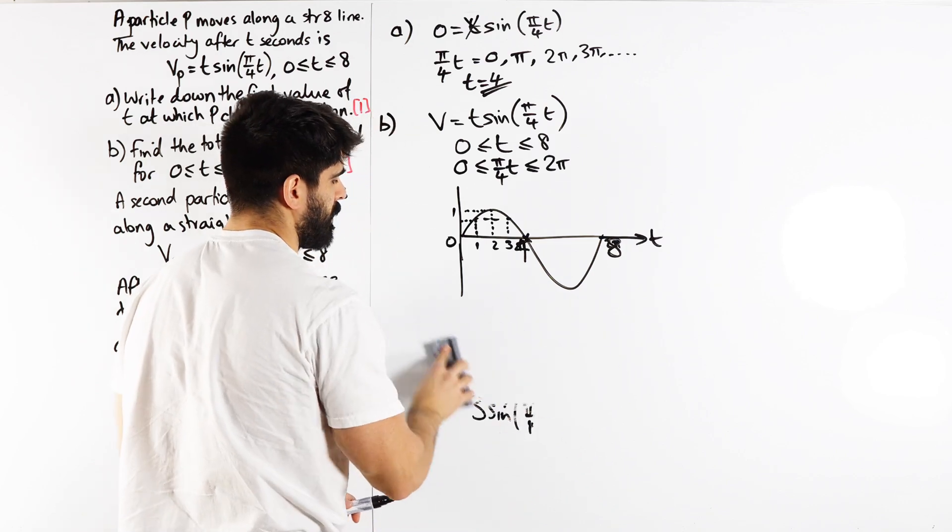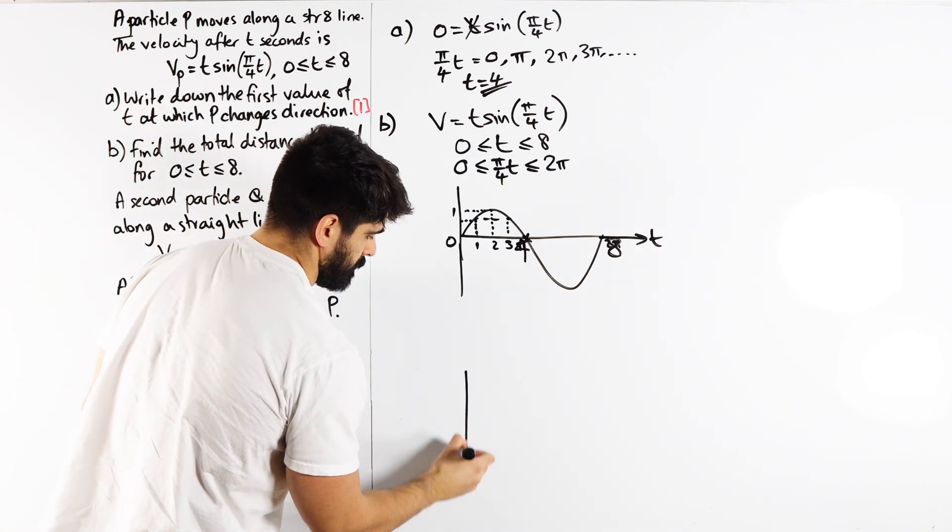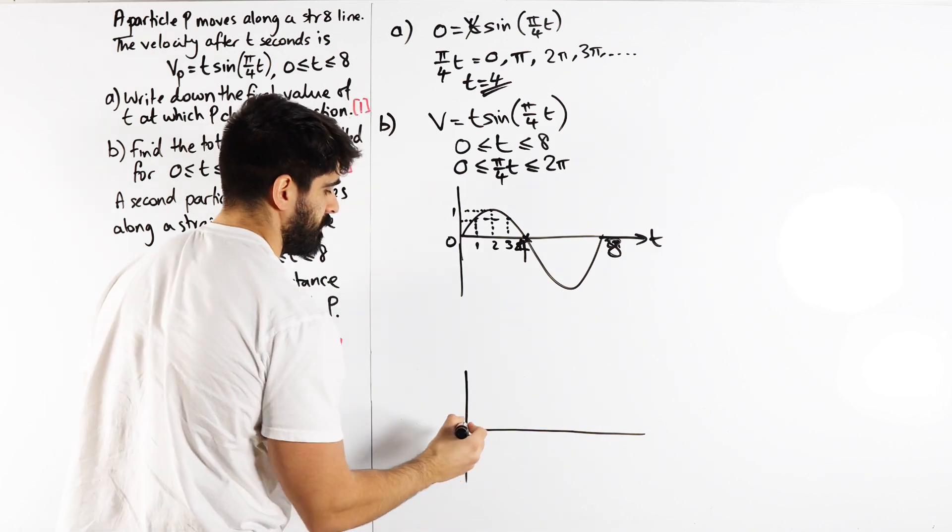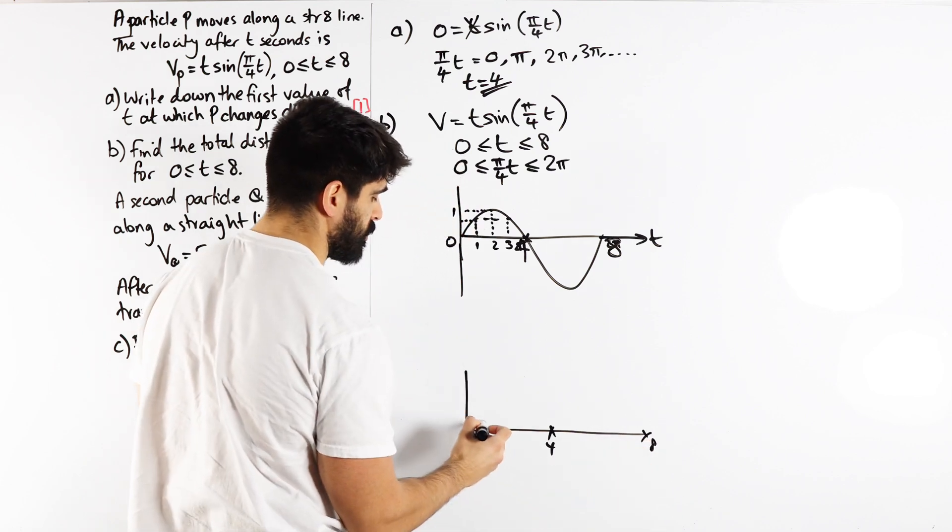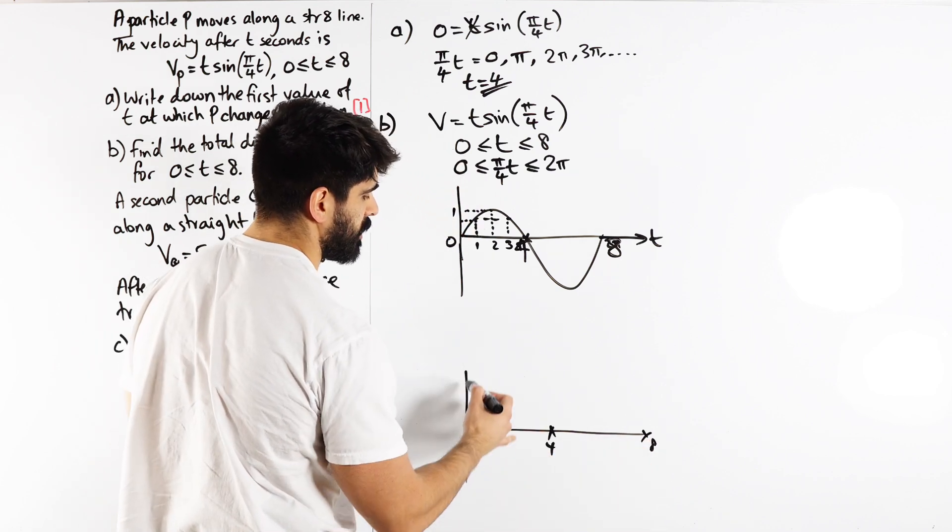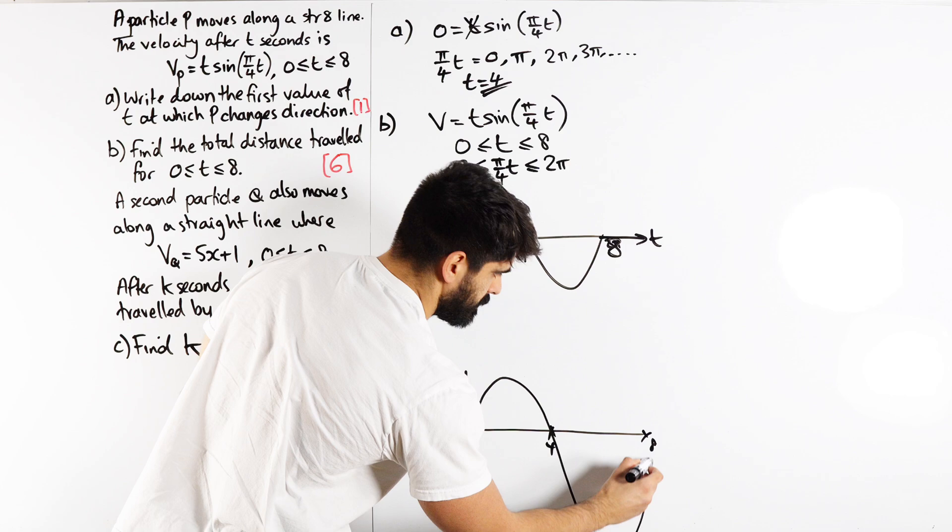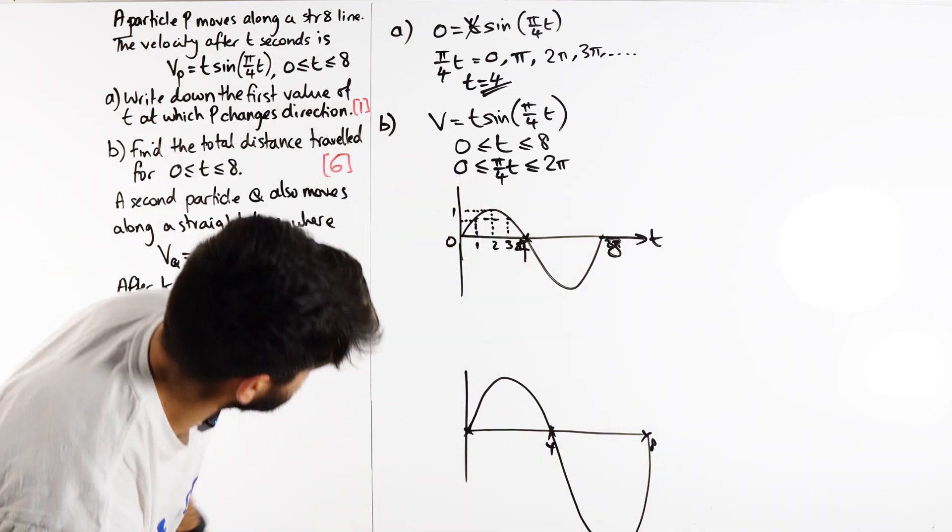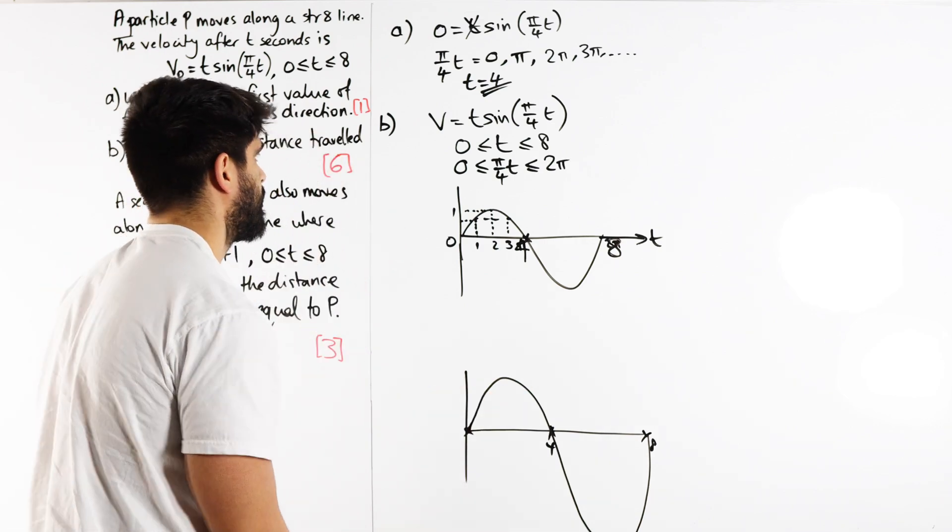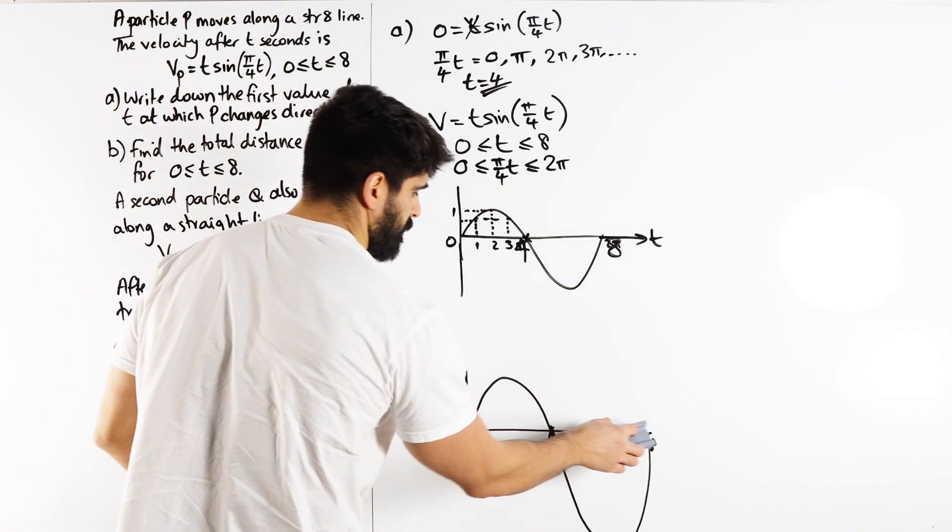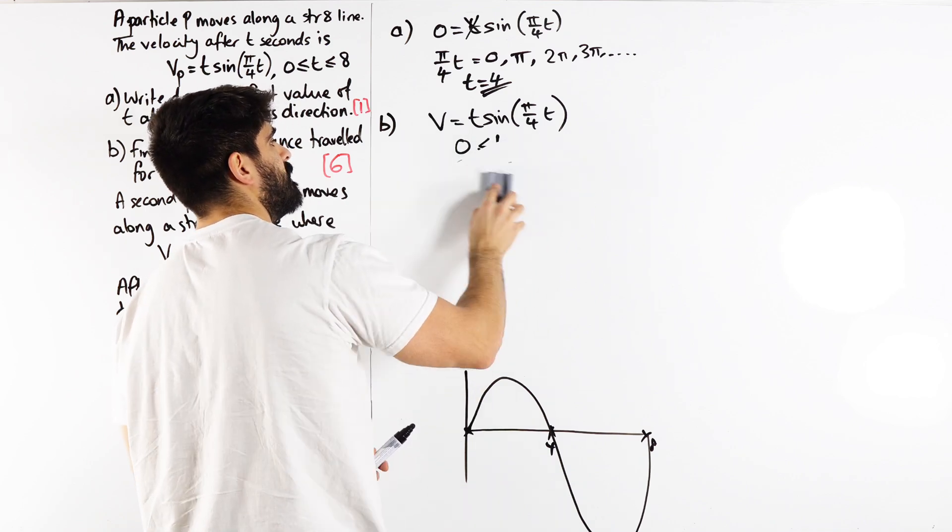I'll have the graph here and then we'll do the working above. I have my intersections with the axes which do not change. As I do my sine graph, I'm going to make it longer and longer. We can see that the area between 4 and 8 is the negative one. So we're going to integrate between 0 and 4 separately to 4 and 8.